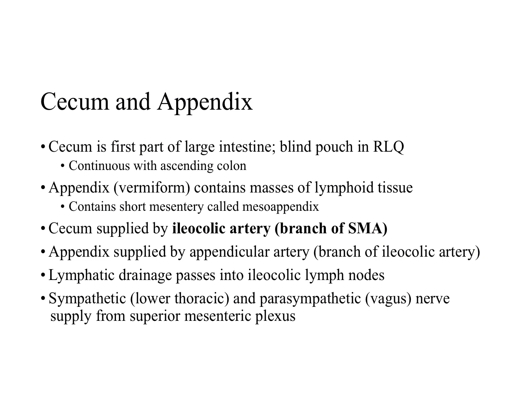The cecum is the first part of the large intestine. It's continuous with the ascending colon. It's a blind intestinal pouch about 7.5 centimeters in length and breadth, and it lies in the iliac fossa of the right lower quadrant of the abdomen. If distended with feces or gas, it can be palpable through the anterolateral abdominal wall. The cecum usually lies within two and a half centimeters of the inguinal ligament. It's almost entirely enveloped by peritoneum and can be lifted freely. However, the cecum has no mesentery, so it's pretty free to move around, but it is commonly bound to the lateral abdominal wall by a cecal fold.